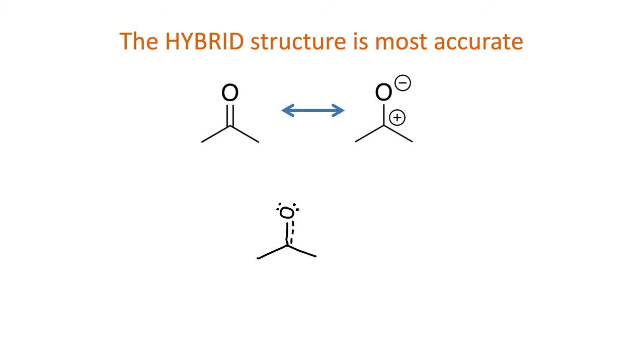Second, draw all the lone pairs that remain on atoms at all times, parts optional. Third, anywhere that has a pi bond in any of the resonance structures gets drawn in as a dashed line in the hybrid.